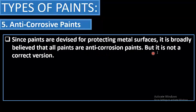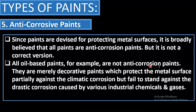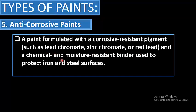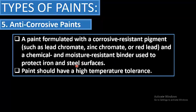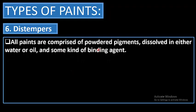It is broadly believed that all paints are anti-corrosion paints, but this is incorrect. All oil-based paints, for example, are merely decorative paints that protect metal surfaces only partially against climatic corrosion but fail against drastic corrosion from industrial chemicals and gases. A true anti-corrosive paint is formulated with corrosion-resistant pigments such as lead chromate, zinc chromate, or red lead, combined with a chemical and moisture-resistant binder to protect iron and steel surfaces.